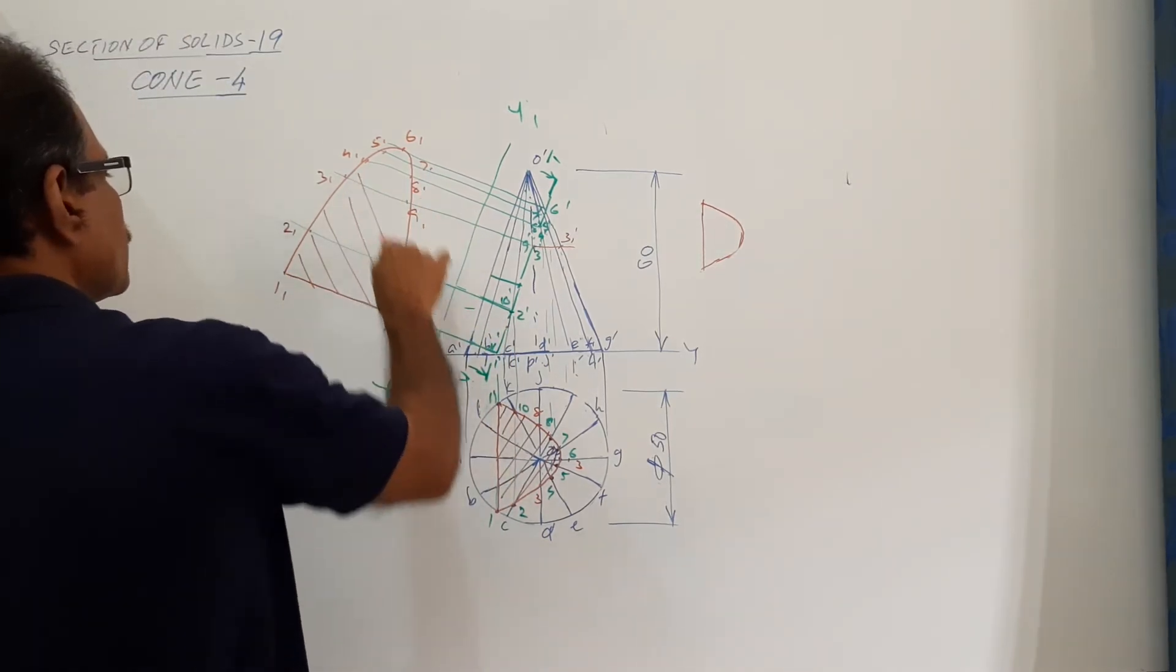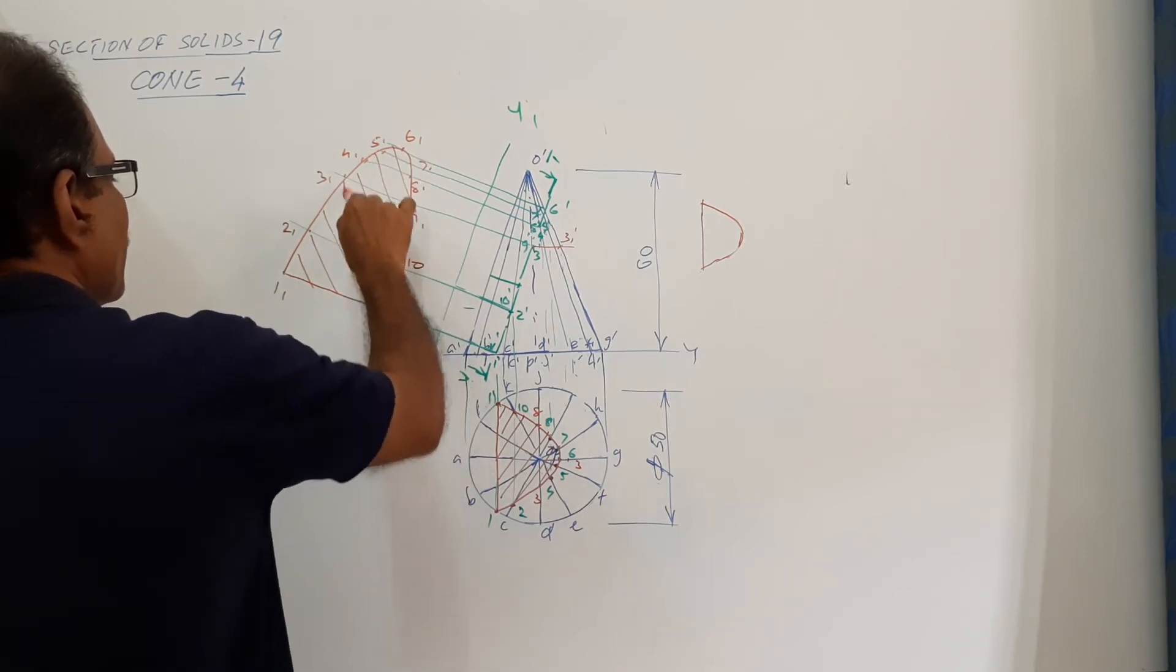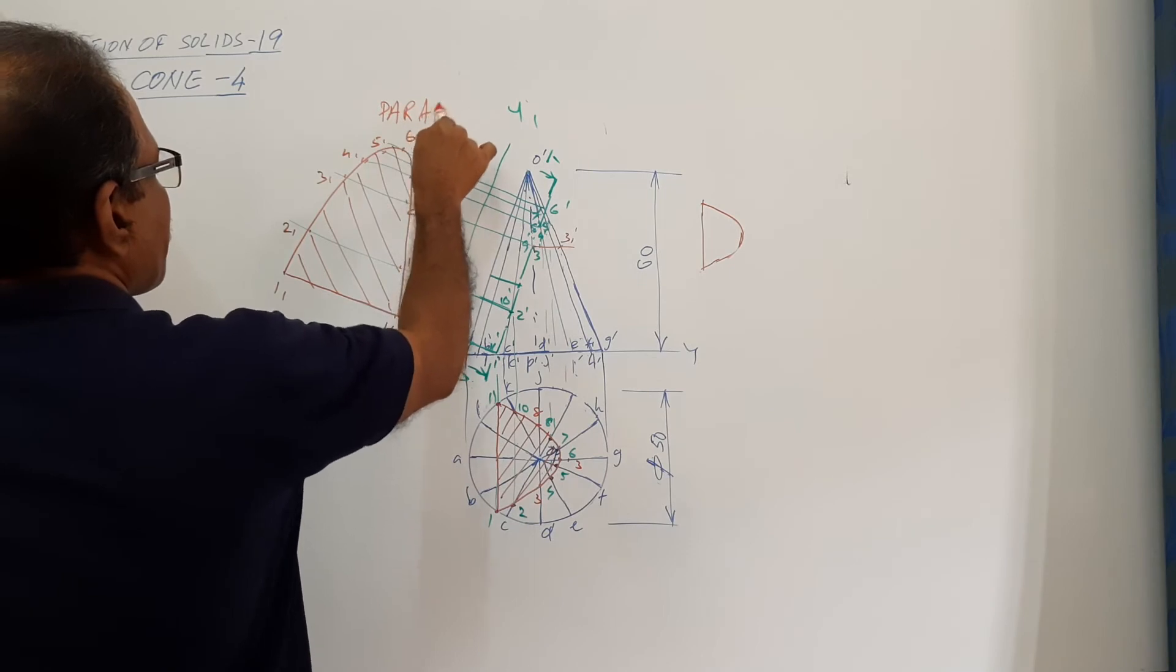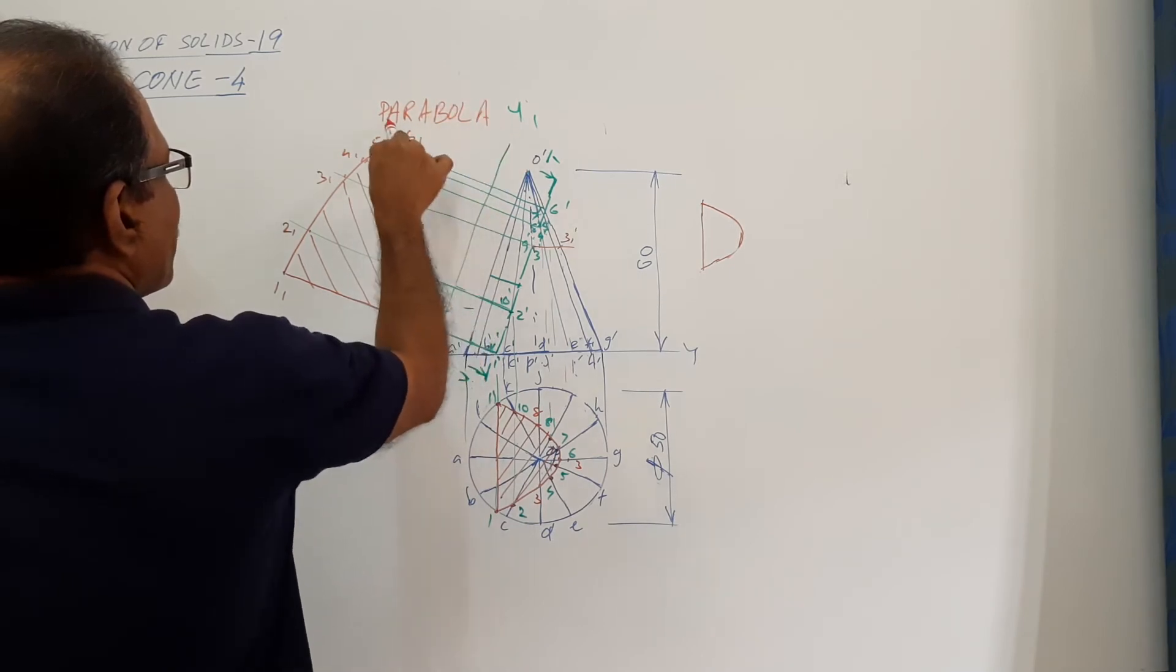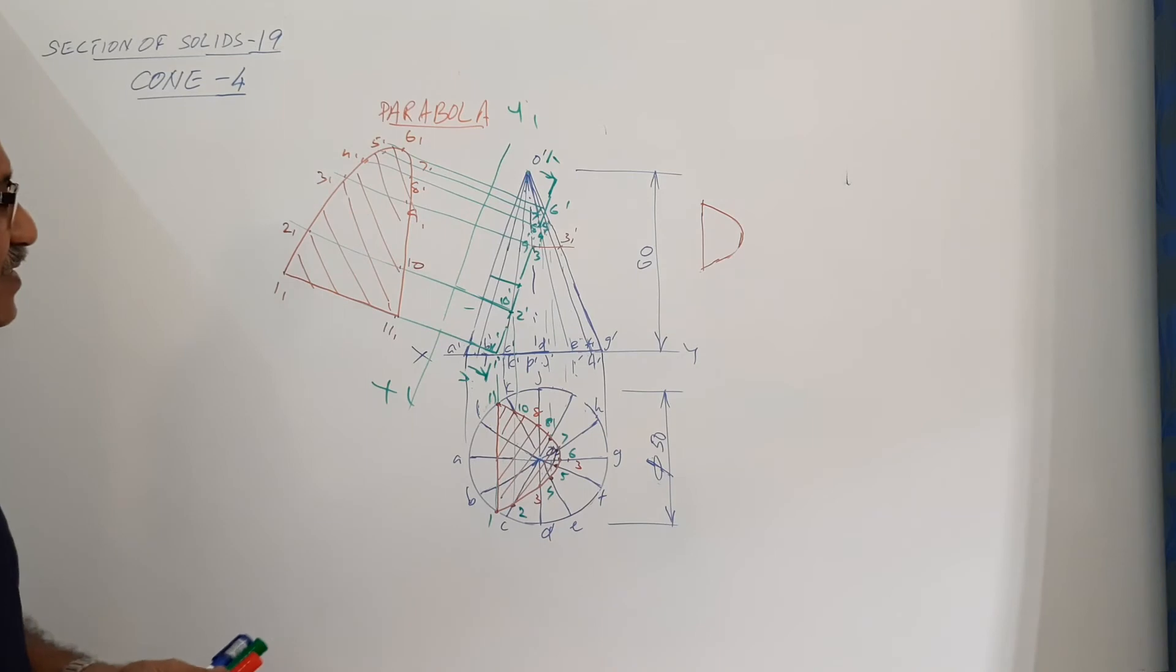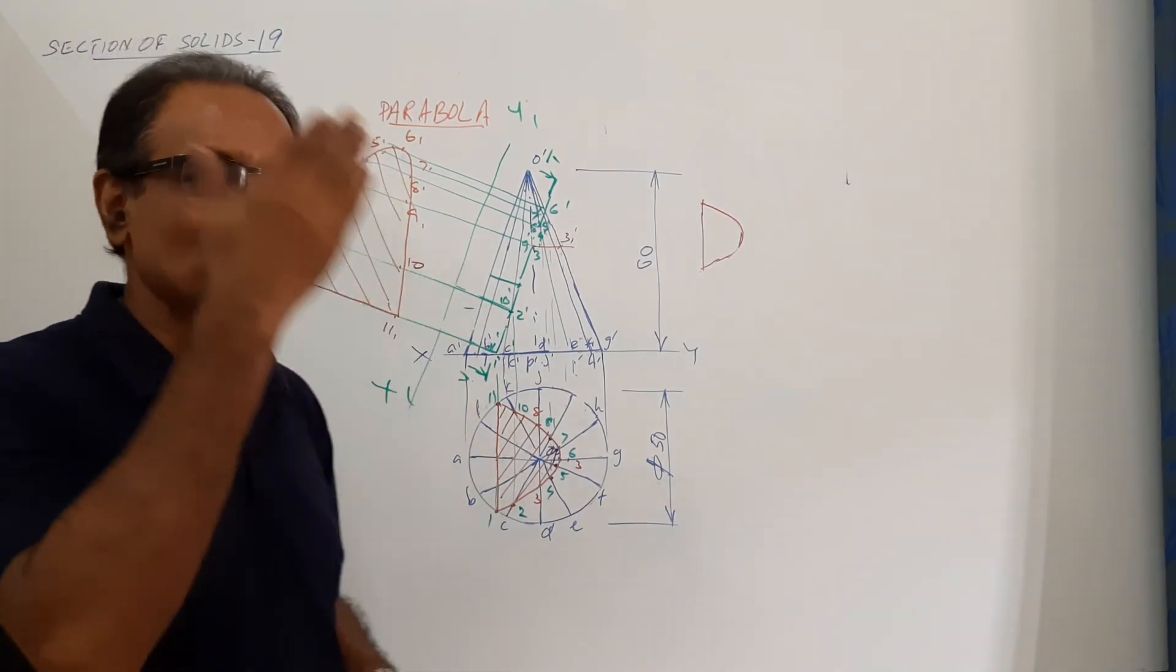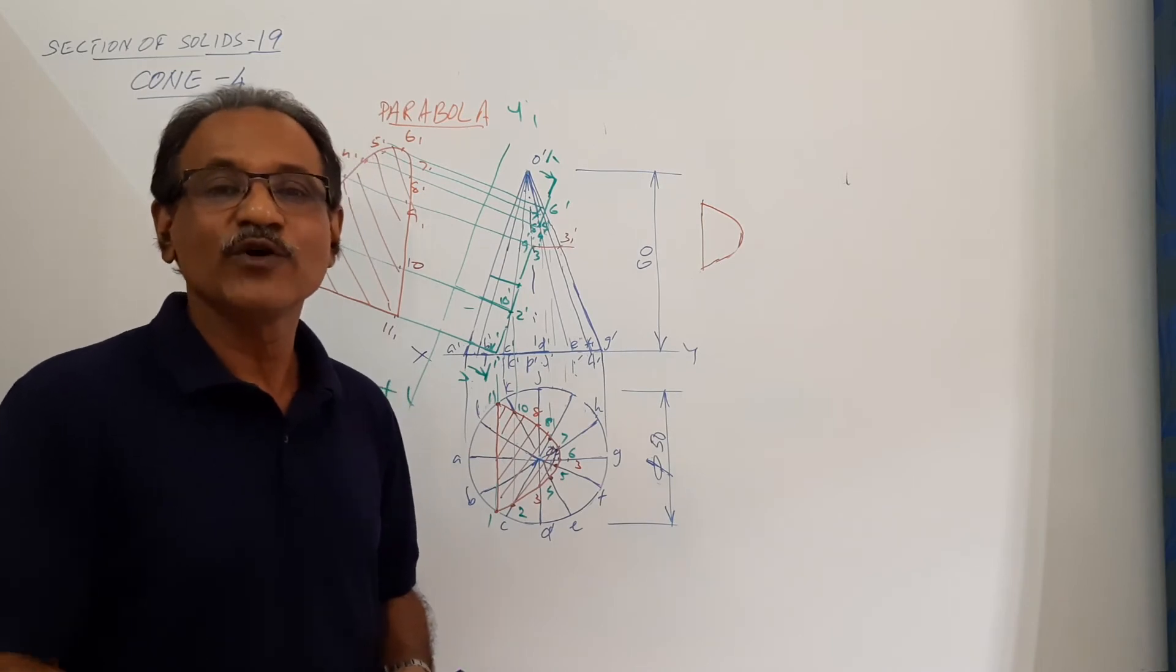H parallel to X one. What is the shape? This is a parabola, mathematically true. So when a cone is cut by a cutting plane parallel to an end generator, you get a parabola.